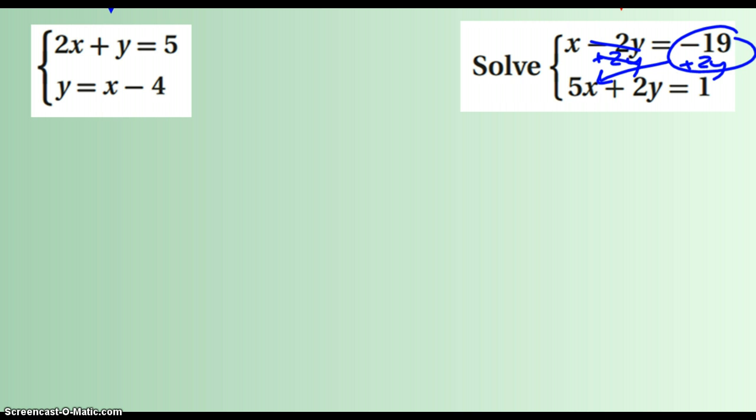But then I would have to plug this in for this x, and do a distributive property, and then solve. So we can always use substitution, but here's what we can do. Notice how I have a negative 2y and a plus 2y. They are opposites. If I were to add them together, they would cancel out. You can actually, when we have a system, do that.